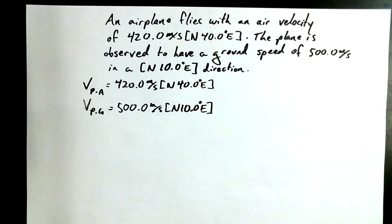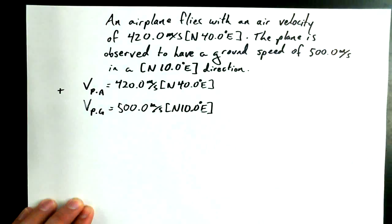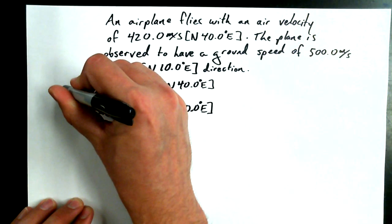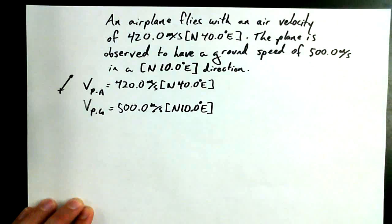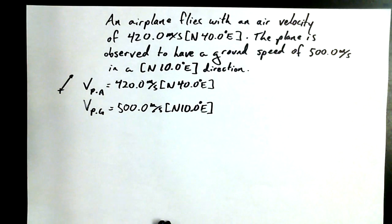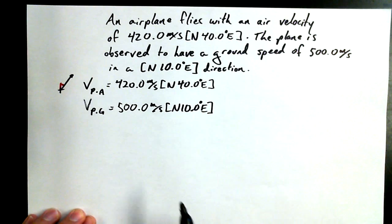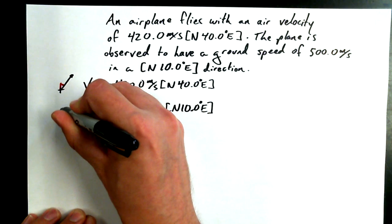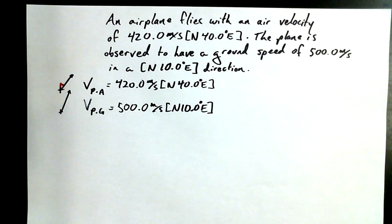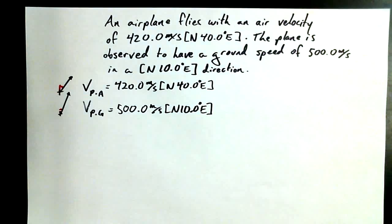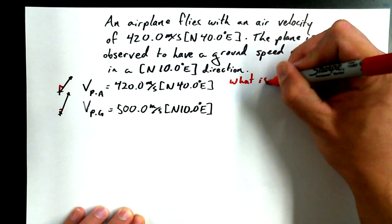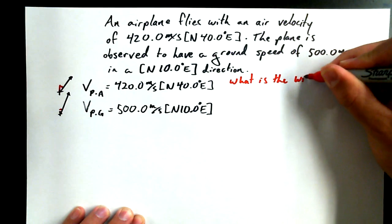For velocity of the plane relative to the ground, 500 meters per second north 10 degrees east. All right. Now before I go any further, I always like to do a little bit of a sketch of these vectors, just to make sure I sort of know what they look like. So off to the left-hand side here, I'm going to do just that. Velocity of the plane relative to the air, 420 meters per second north 40 degrees east. Well, that's going to look something like this, where 40 degrees is the angle relative to the north.